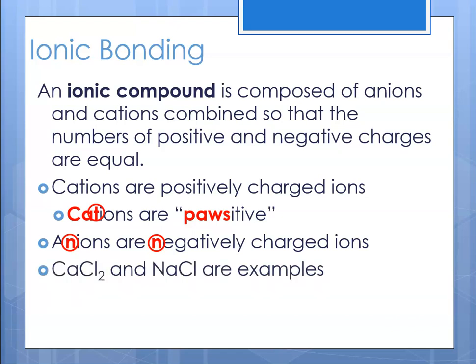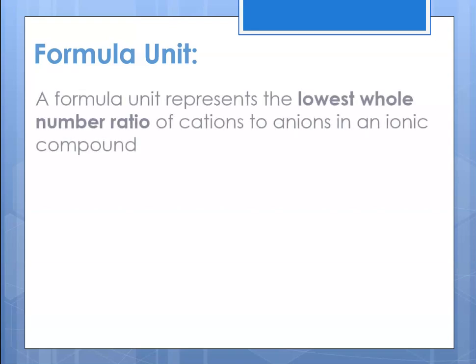Two examples would be calcium chloride and sodium chloride. So how do we represent ionic compounds? We use something called a formula unit. We can't write a molecular formula because no molecules are formed — we've got collections of anions and cations. The formula unit represents the lowest whole number ratio of cations to anions in an ionic compound.